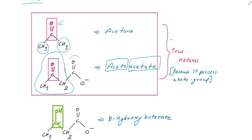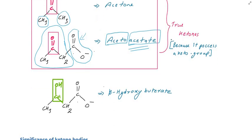The acetone bodies — what we reply by acetone bodies — include beta-hydroxy butyrate and acetoacetate.